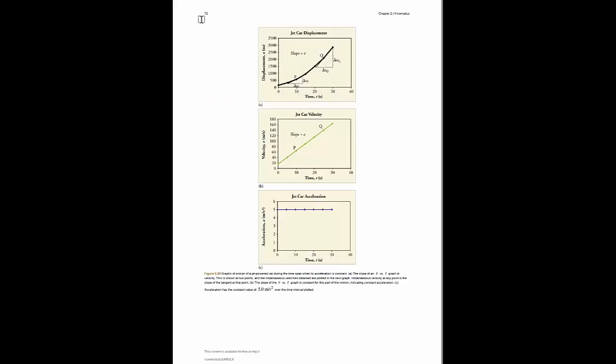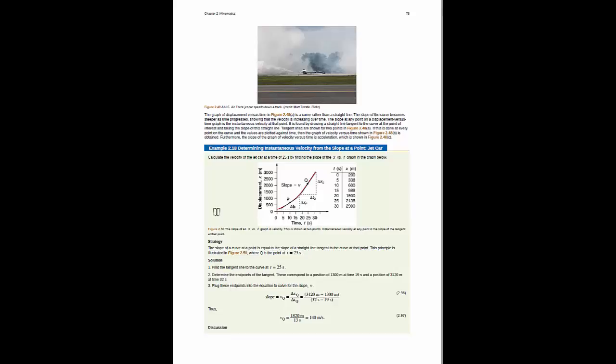After this section, the book then moves on to graphs of motion with a constant but non-zero acceleration, with three examples of graphs: displacement, velocity, and acceleration for the same motion on page 72. And then it goes through and discusses how these different graphs are connected to one another.